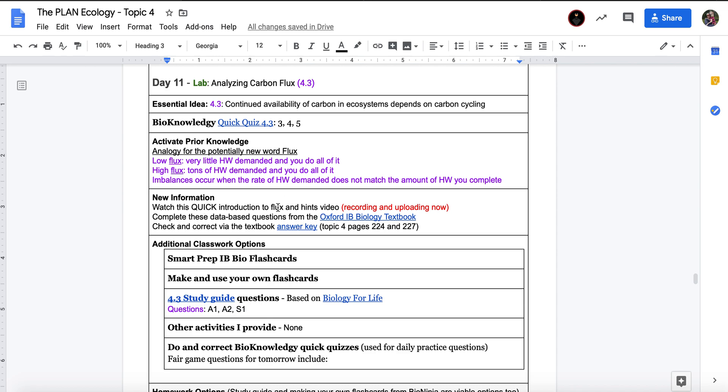You'll click this video that I'm watching. You will have already done that. And then you'll complete these questions here. Click the link for Oxford IB Biology textbook. And then check and correct your answers afterwards via this answer key. Now, you just have to go to Topic 4, pages 224 through 227.